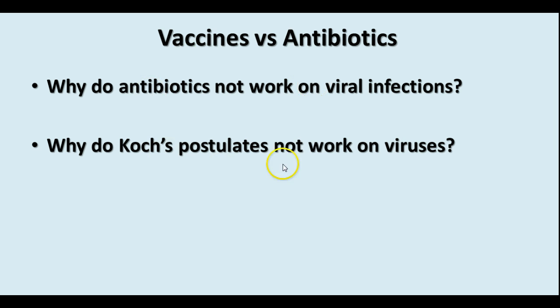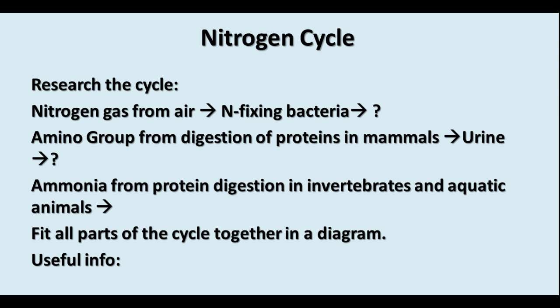Koch's postulates don't work on viruses because you have to be able to grow the pathogen in pure culture with nothing else present. Viruses can only grow and reproduce inside living cells, so you would always have a living cell included there as well as the virus.